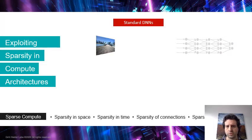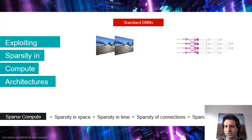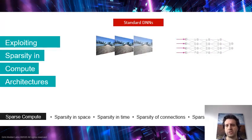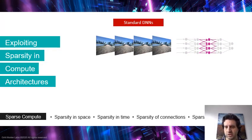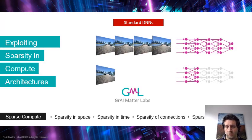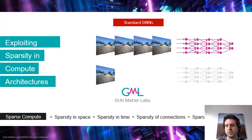And that's exactly what we want to do. In a standard DNN implementation, you get image after image and for each image you execute all the neurons, all the synapses, and all the neurons in your network. You do this for every image, even if the scene hasn't changed almost at all.